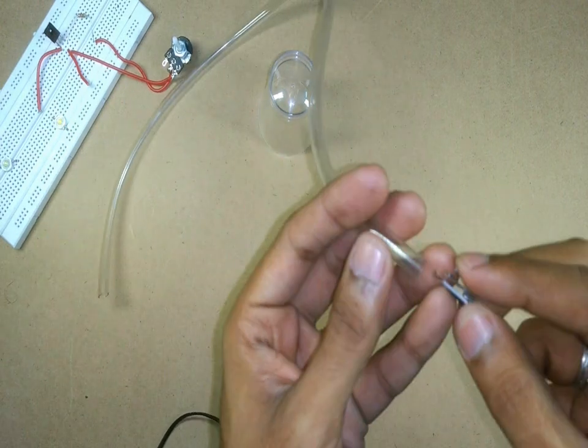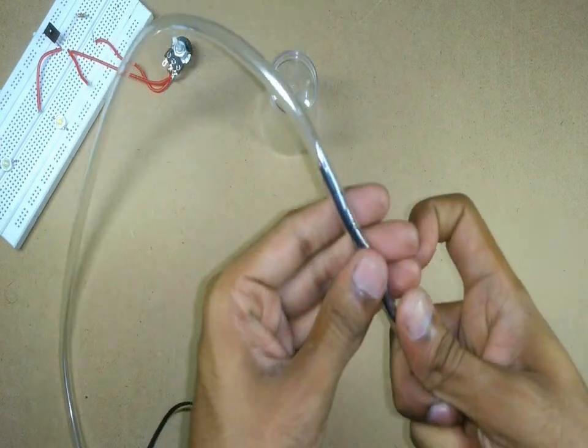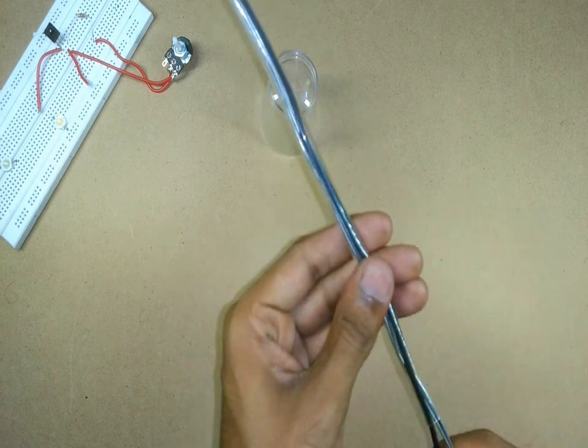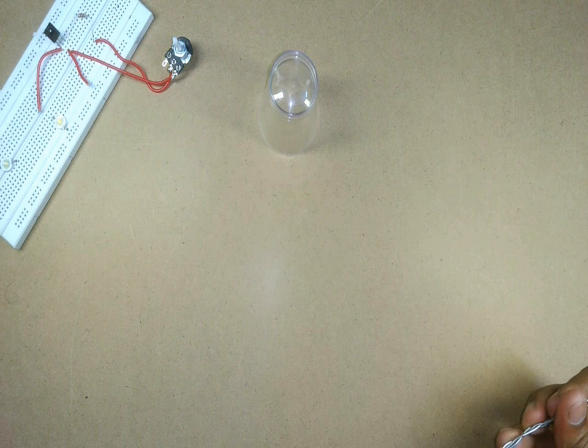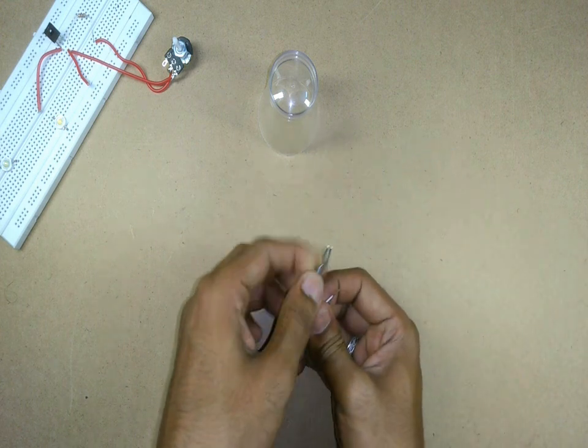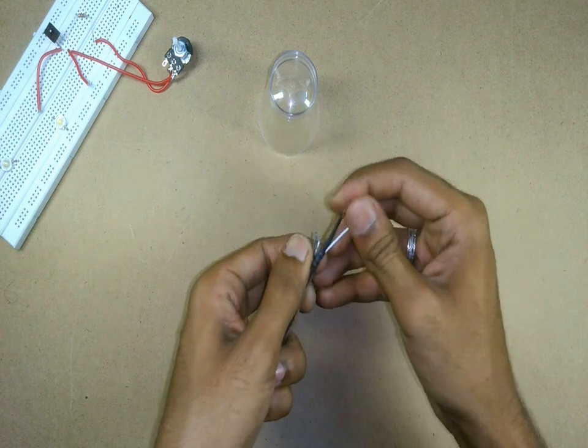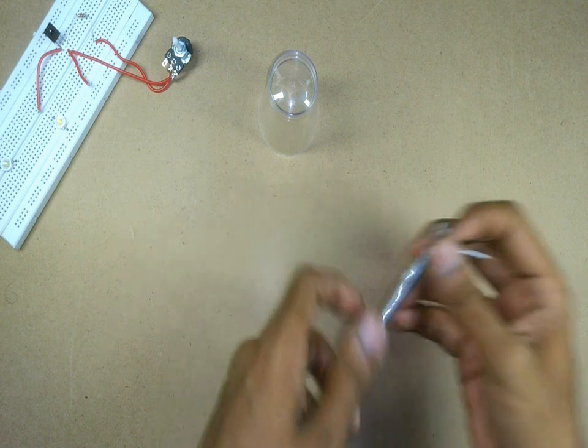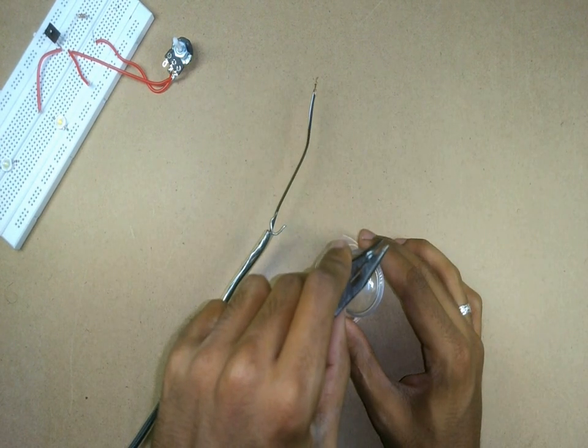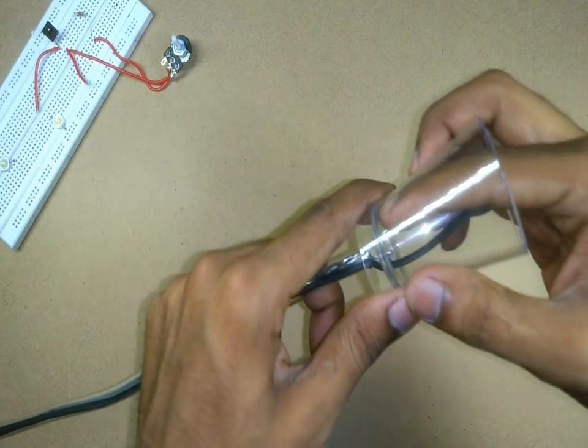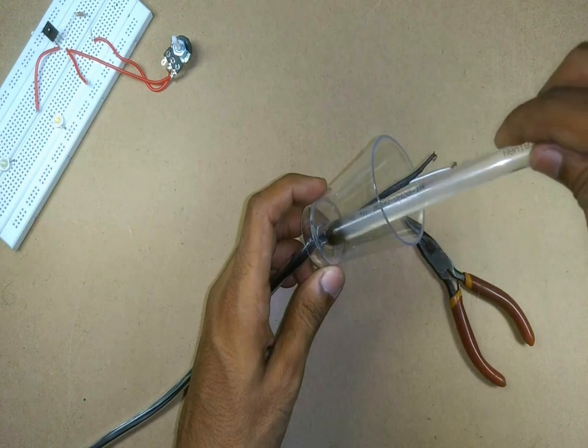We will pass this binding wire along with the charger wire through the tube to the other end. Make two holes in this plastic glass and fix this wire to the glass using some hot glue or super glue.